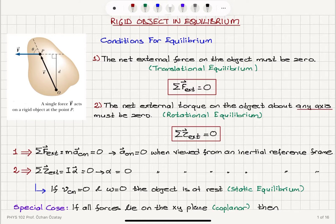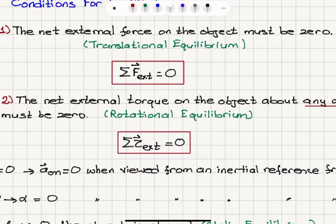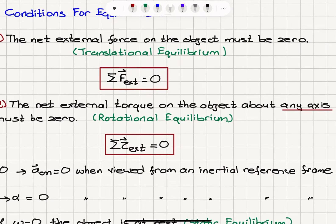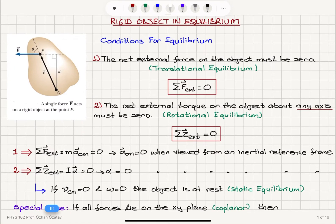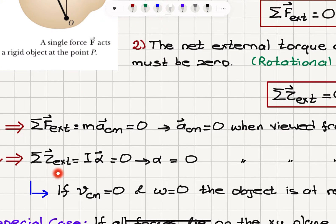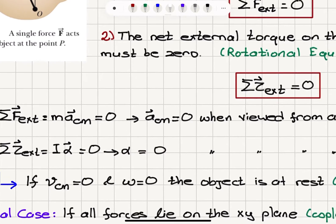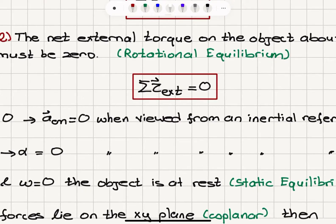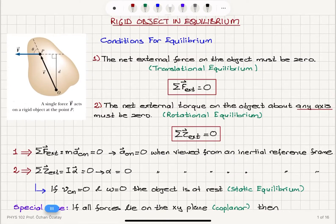The other condition is that the net external torque on the object about any axis must be zero. That's called rotational equilibrium. All the torques acting on the object should add up to zero. Using Newton's second law in rotational form, torque equals I times alpha. Alpha must be zero, so there should be no angular acceleration when the object is viewed from an inertial reference frame.